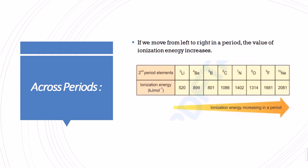Let's talk about the period and the group — how ionization energy is affected across the period and down the group. Across a period, the ionization energy increases due to the decreasing atomic size, which contracts the atom towards the nucleus. The electron is more attracted towards the nucleus because the number of protons increases, so more energy is required to remove the electron.